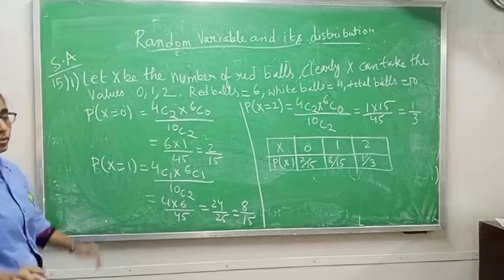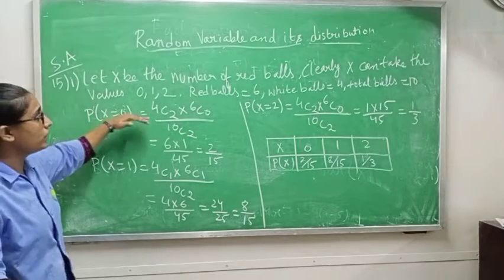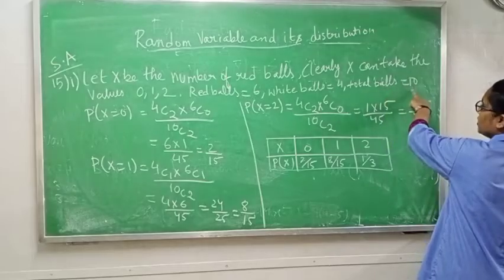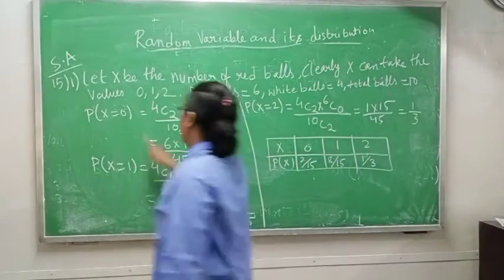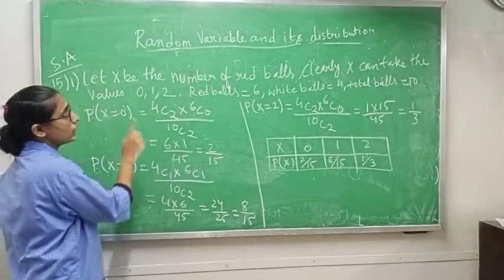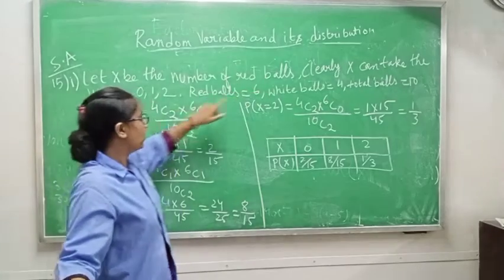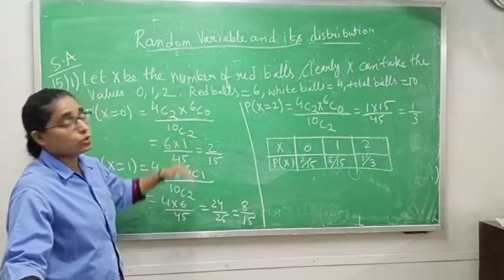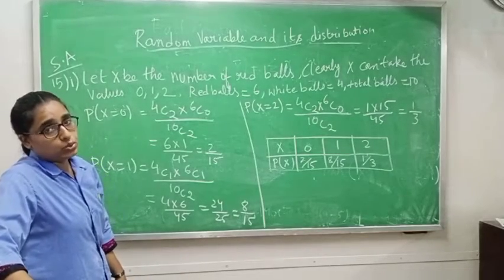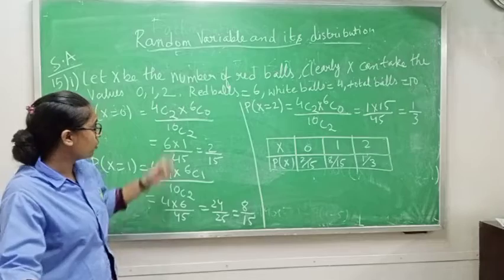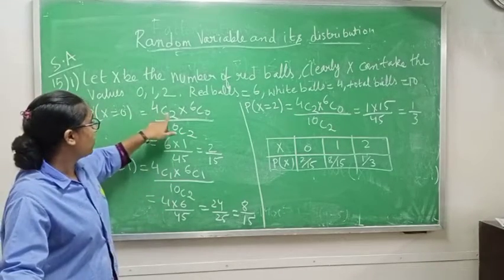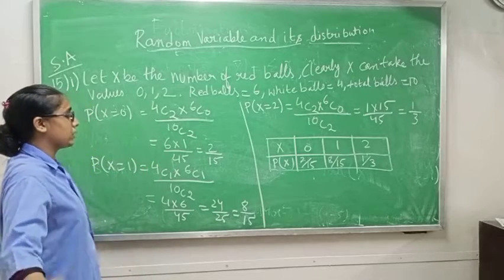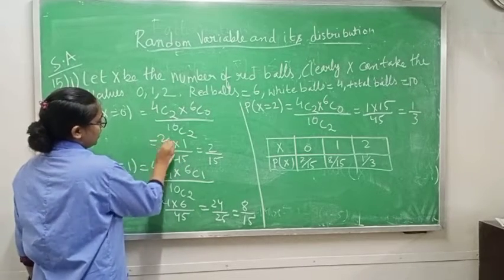P(X=0): red balls are 0, so from 6 red we take 0 and from 4 white we take 2. That gives 4C2 divided by 10C2. 4C2 is 6, 4C0 is 1, and 10C2 is 45. After cancelling, P(X=0) = 2/15.